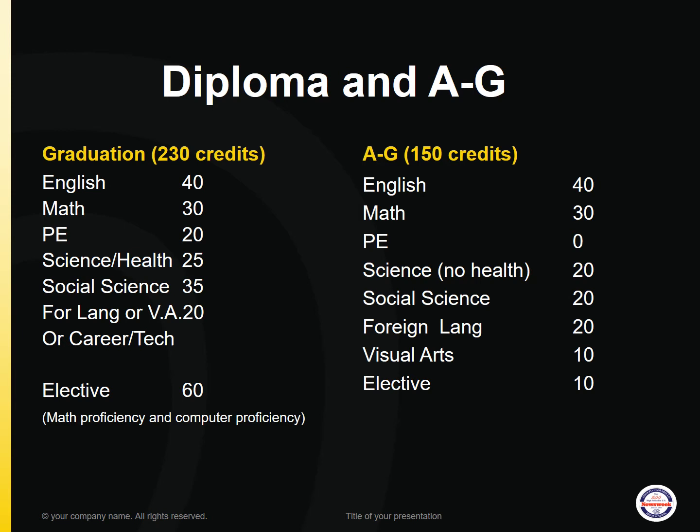The other difference, which is not on this slide, is the SAT and ACT tests, which you need to take in addition to meeting the A through G requirements to go directly to a four-year university.